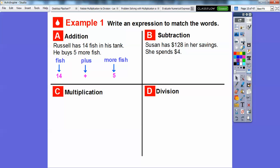So Susan has $128 in her savings. She spends $4. This is the subtraction. So it's the money she has in there minus the money she spent. So there's her expression, 128 minus 4. Easy, huh?